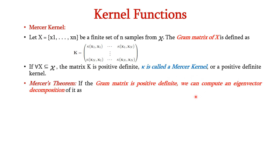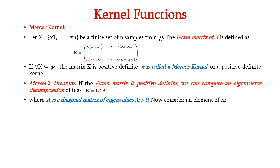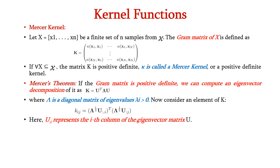We can express this Mercer kernel using Mercer's theorem. If the Gram matrix is positive definite, we can compute an eigenvector decomposition of it as K is equal to U transpose into diagonal lambda matrix into U, where the diagonal matrix indicates eigenvalues with lambda greater than 0. For an individual element of K, we can represent it as Kij equal to the diagonal matrix of Ui transpose into the diagonal matrix of Uj, where Ui represents the i-th column and Uj represents the j-th column of the eigenvector matrix U.